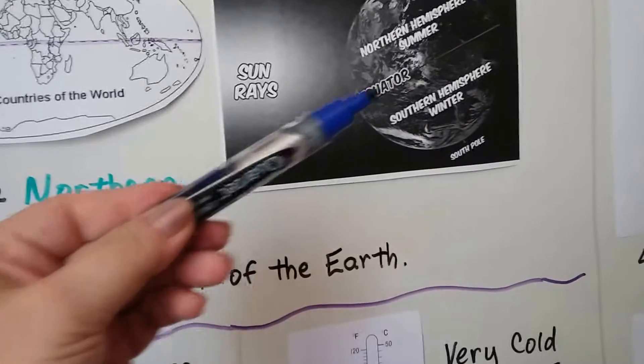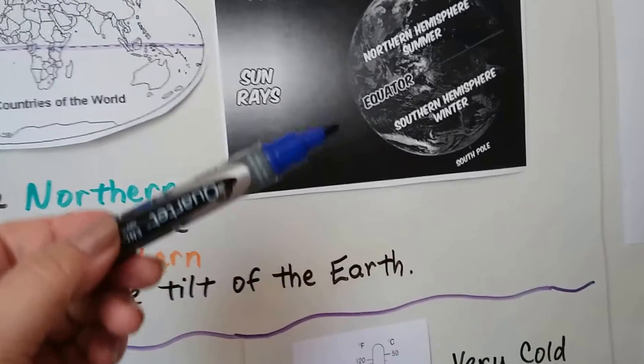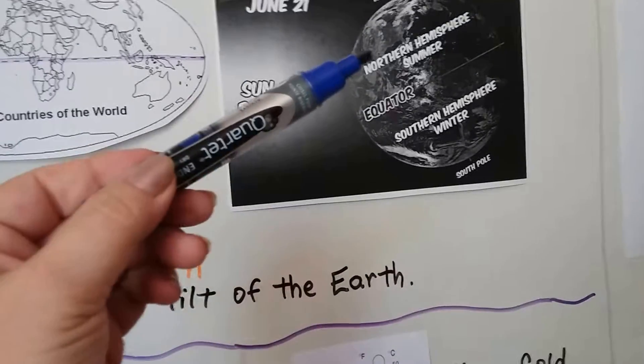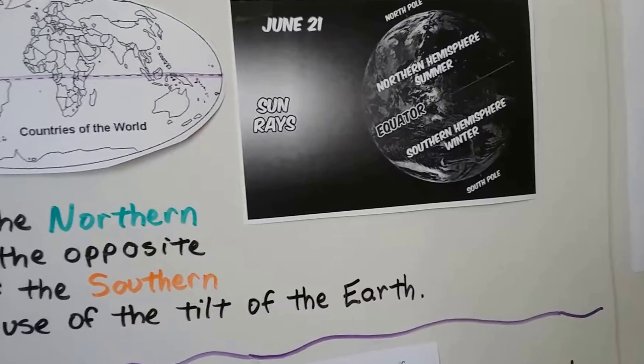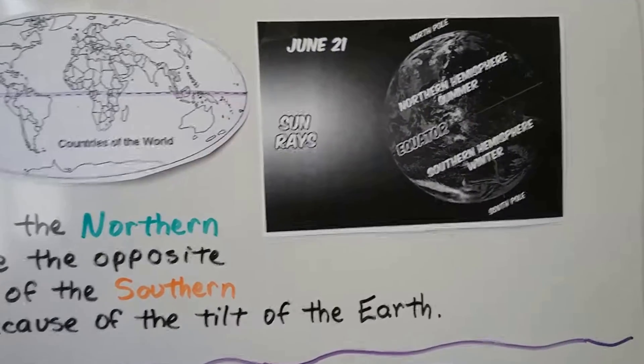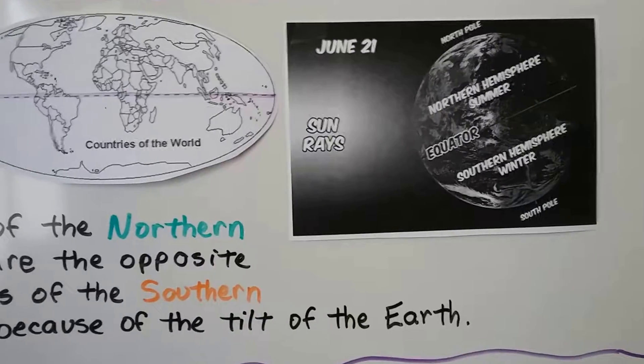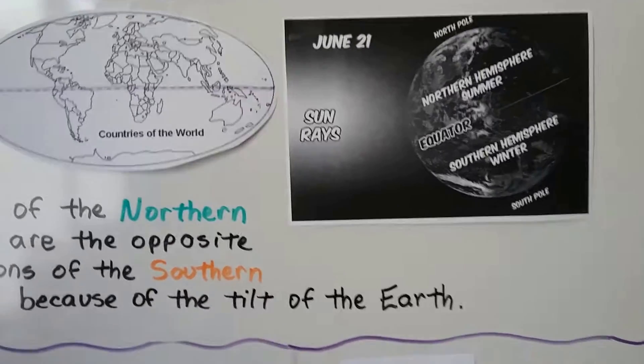See that? The equator is going on an angle like this, so the northern hemisphere is getting more sunlight in June. See that? And the southern hemisphere isn't. That's why the seasons are opposite. It's because of the tilt of the earth when the sun is shining.